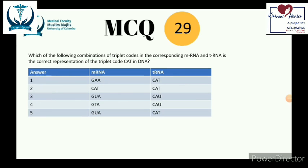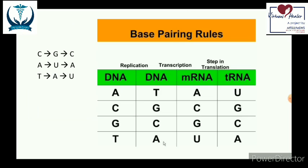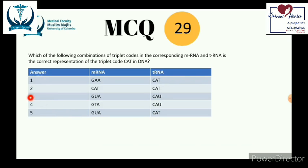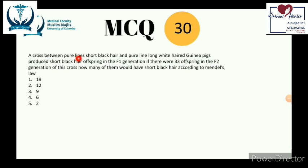Question 29: which combination of triplet codes in mRNA and tRNA correctly represents the triplet code CAT in DNA? You only need two principles: mRNA is complementary to DNA, and tRNA is complementary to mRNA. Also, RNAs do not have thymine — they have uracil instead. Applying this: C in DNA becomes G in mRNA and C in tRNA, giving GUA in mRNA and CAU in tRNA — answer number 3.